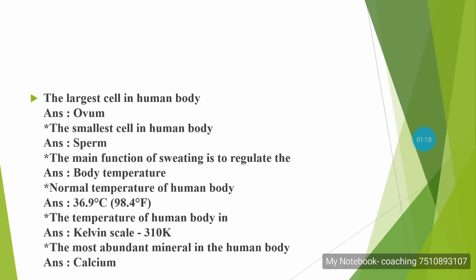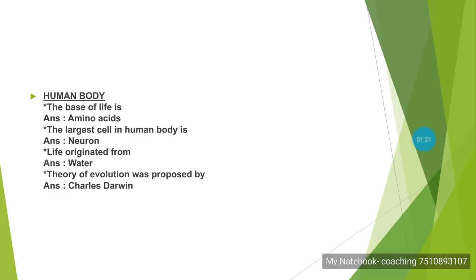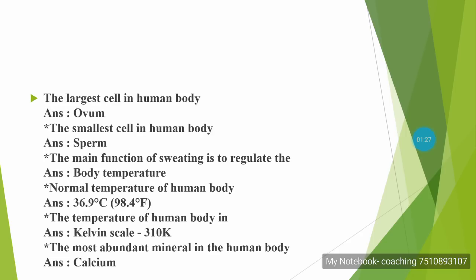The largest cell in the human body is the ovum. The smallest cell in the human body is the sperm.